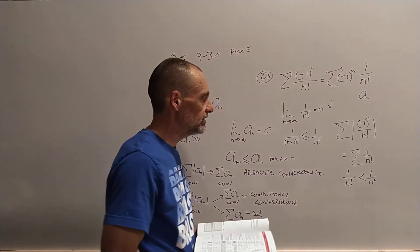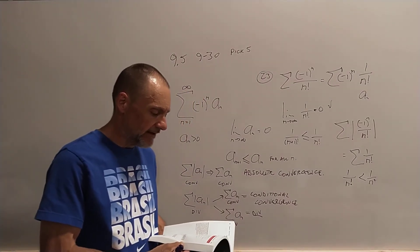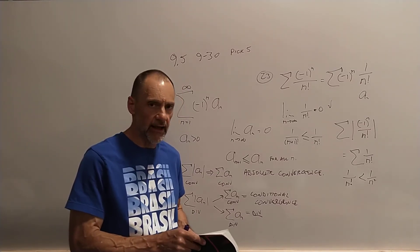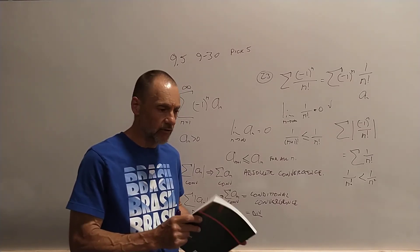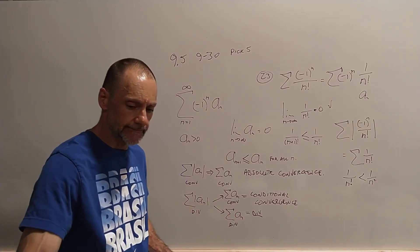So you could use the comparison test to determine that this thing is convergent. So if you have any questions about this, send me an email. And when we're done with 9.5, then we have some problems in 9.6. And then when we're done with those, you can try that challenge of memorizing the table and then trying to do all those problems in 9.6.